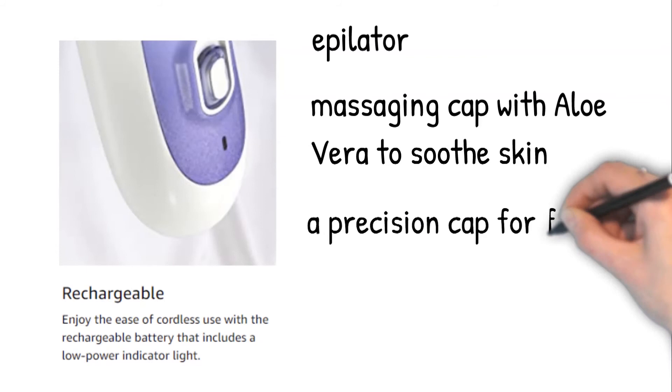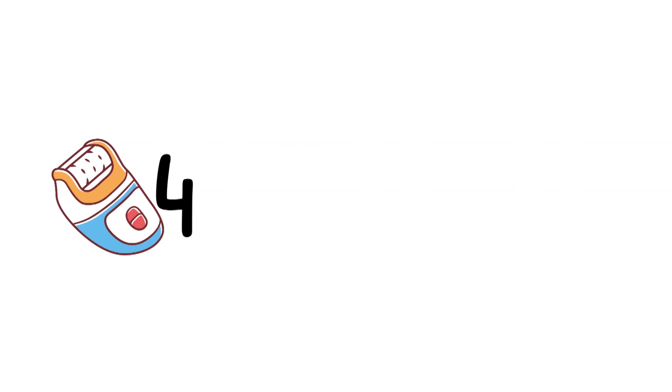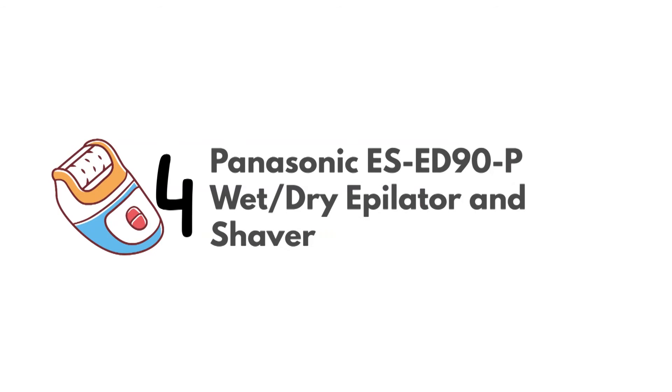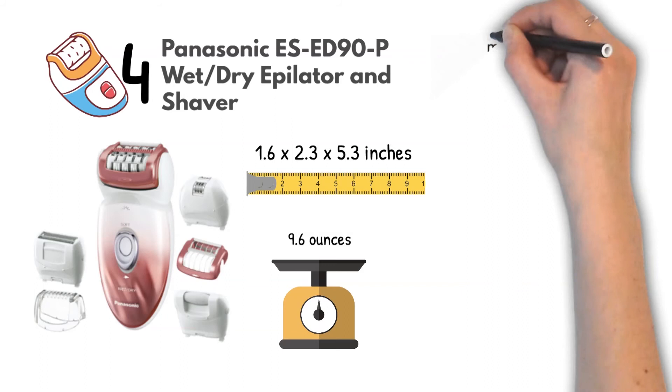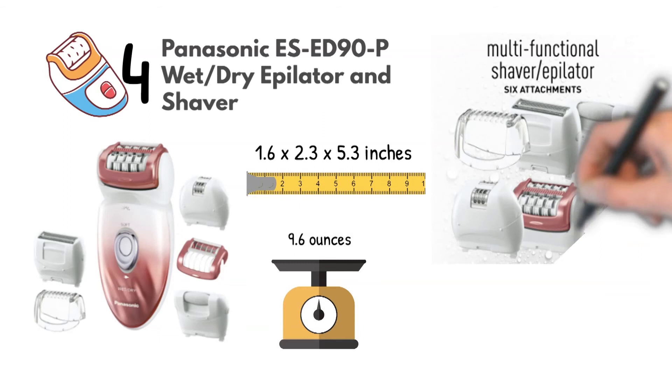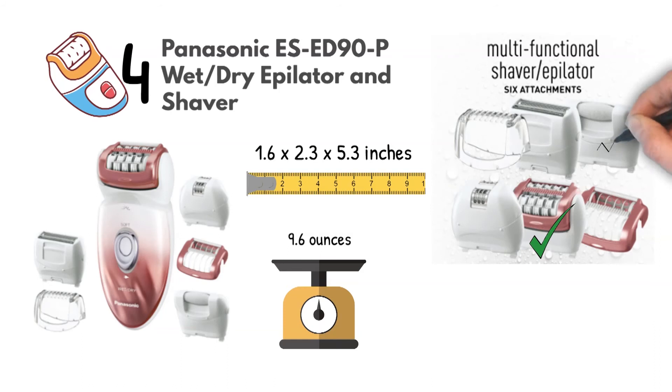At number 4, we have the Panasonic ES-ED90P Wet Dry Epilator and Shaver. Dimensions of this product are 1.6 by 2.3 by 5.3 inches and it weighs 9.6 ounces. The Panasonic's multifunctional women's electric razor and epilator with a high performance dual speed motor features 6 attachments. These include a snap-on hair remover and pedicure buffer for complete hair removal and foot care experience at home.